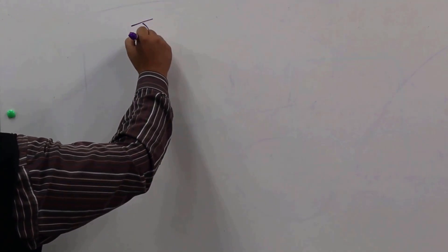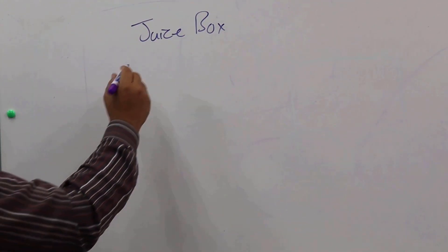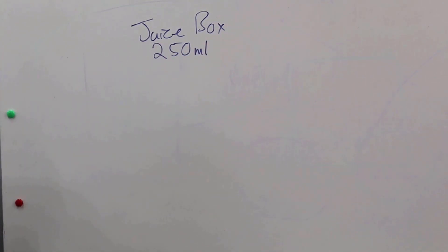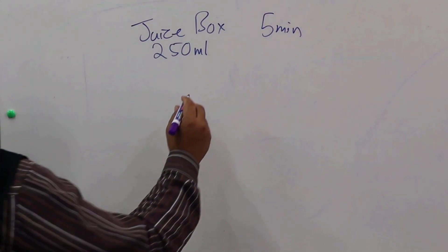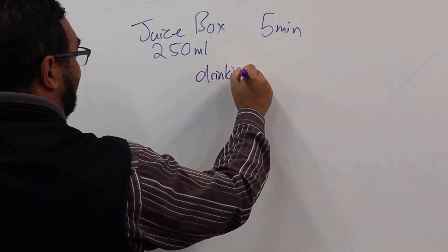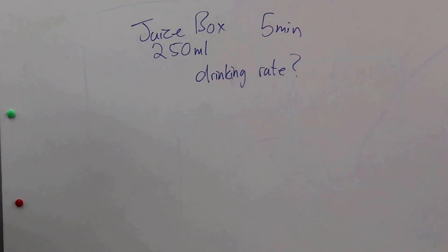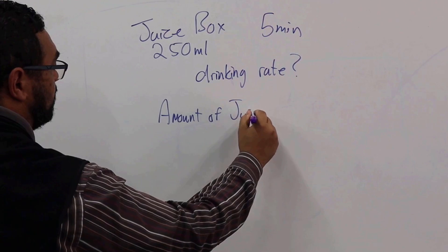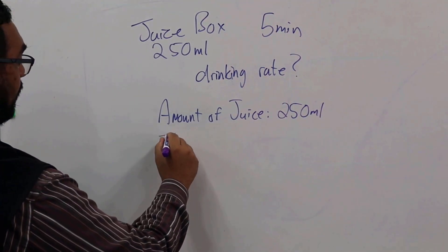Imagine I'm drinking a juice box. I'm just going to put up here juice box, right. Suppose it has 250 milliliters of juice, and I managed to finish this within the space of five minutes. So it takes me five minutes to do that. The question is, what is my drinking rate? So we first need to identify our quantities. Now we have the amount of juice, and what is that? That is 250 mils. We also have our time.